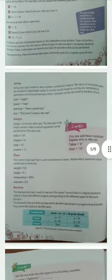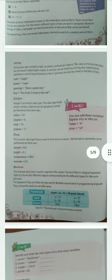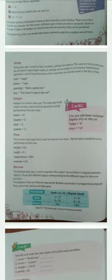First is string. String data types comprise text, numbers, symbols, and spaces, and the values of string data types are enclosed in apostrophe marks. Second is integer. Integer is a numeric data type and this data type holds whole numbers.